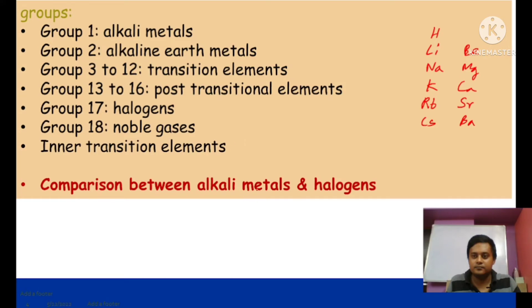An important comparison: alkali metals are highly electropositive, while halogens are highly electronegative. Alkali metals carry a +1 charge; halogens carry a –1 charge. Alkali metals combine with non-metals to form salts — for example, sodium reacts with chlorine to form NaCl. Alkali metals have low ionization potential; halogens have high electronegativity.